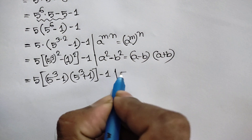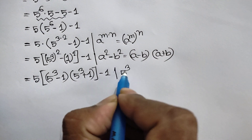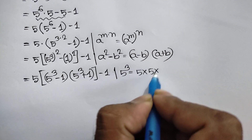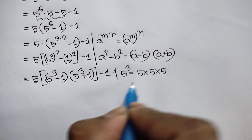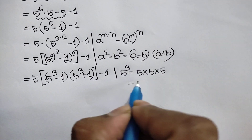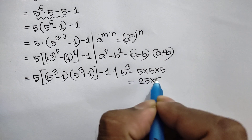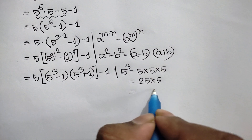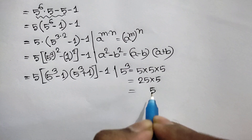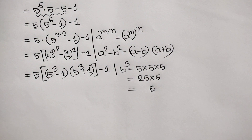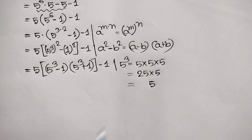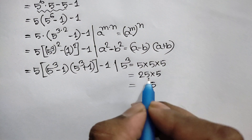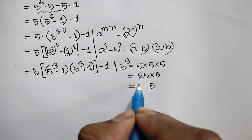Now we know that 5 to the power 3, that means 5 times 5 times 5. 5 times 5 is 25, times 5 gives us 125.